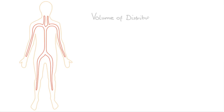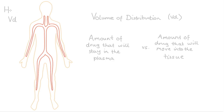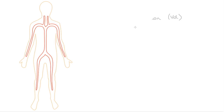Volume of distribution, or VD, represents how much of a drug will stay in the blood plasma and how much will move into the surrounding tissue. A drug with a low VD will mostly stay in the blood plasma. A drug with a high VD will mostly move out into tissue with little circulating in the plasma — essentially, eventual drug in plasma versus eventual drug that ends up in the tissue.